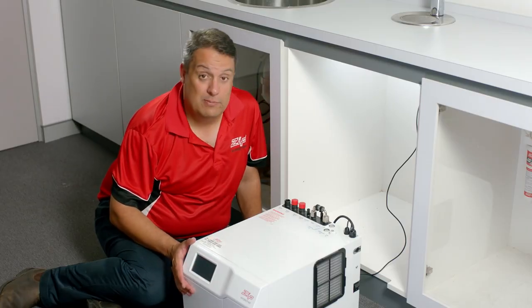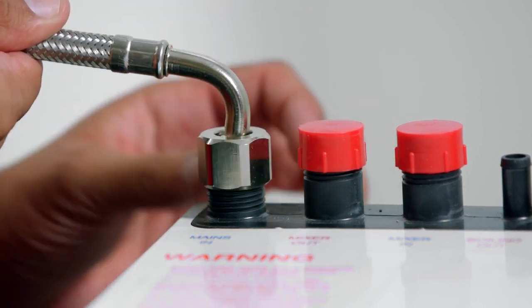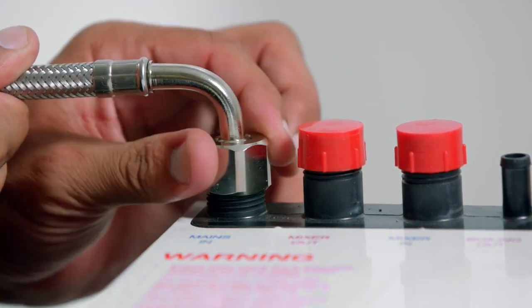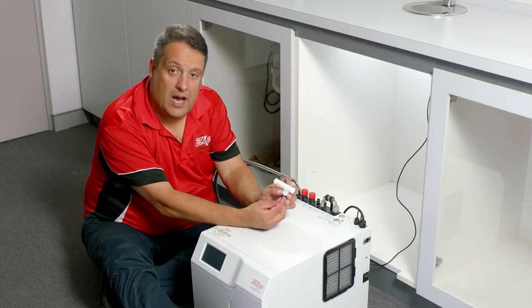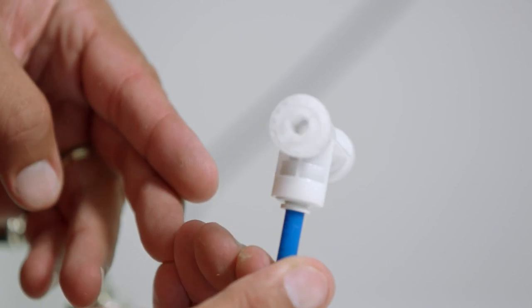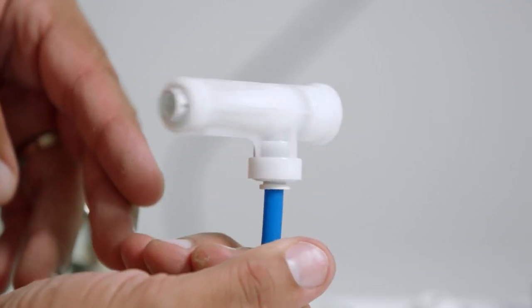This is the Boiling Chilled Sparkling model. Our first connection is our mains connection. The braided hose is supplied with the command centre. This is your water supply from the mains. You also get a carbonation valve. This has an Allen key adjustment on the back of it for flow rate. This goes in your sparkling out.